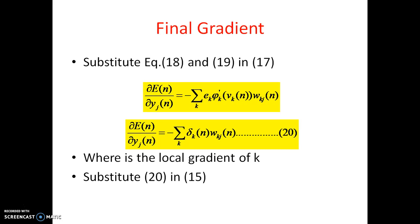So where the delta k is the local gradient of K. So let us substitute the equation 20 in 15 so that we will get delta j of N is equal to phi dash of Vj of N sigma k delta k of N Wkj of N.